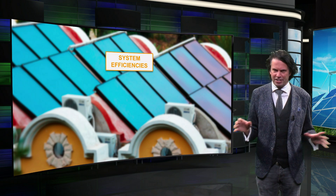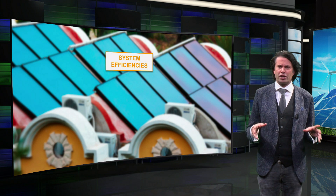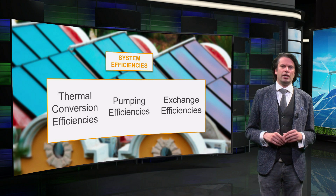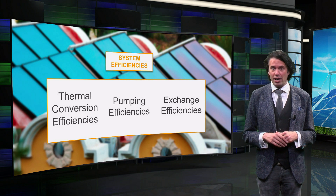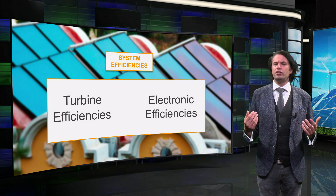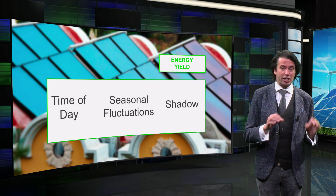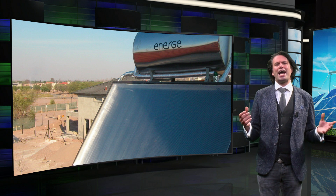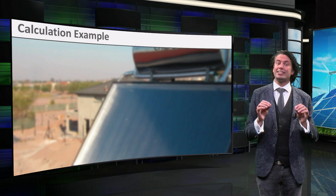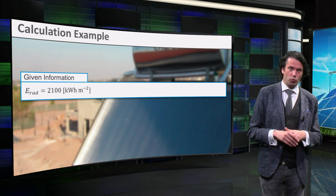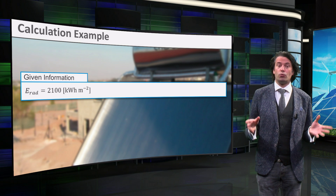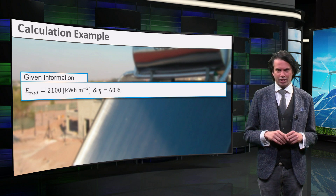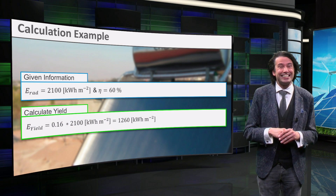Just like PV panels, solar thermal technology converts sunlight into usable energy, so the calculation for energy potential is the same. However, instead of directly converting sunlight into electrical energy, solar thermal converts it to thermal energy, meaning the system is very different. Efficiency losses for solar thermal are caused by thermal conversion efficiencies, pumping and heat exchange efficiencies, and in larger-scale plants also turbine and electrical conversion efficiency. For this calculation we will look at a personal rooftop, using the same irradiation value of 2100 kWh per square meter as our PV example.